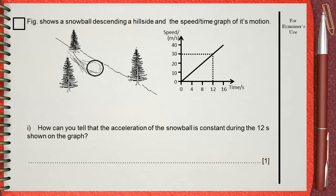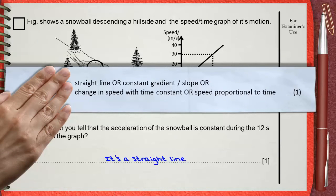You can say it's a straight line. The mark scheme gives one mark for straight line or constant gradient. You can also say constant slope. Another possible answer is change in speed with time is constant or speed is proportional to time.